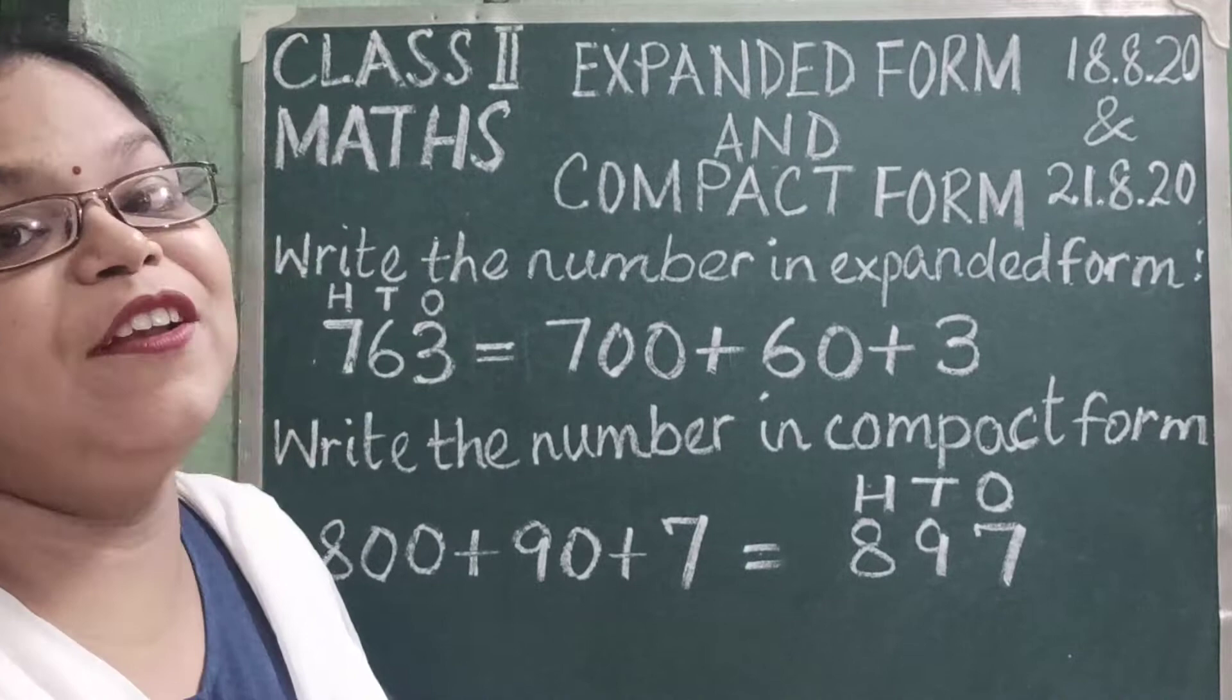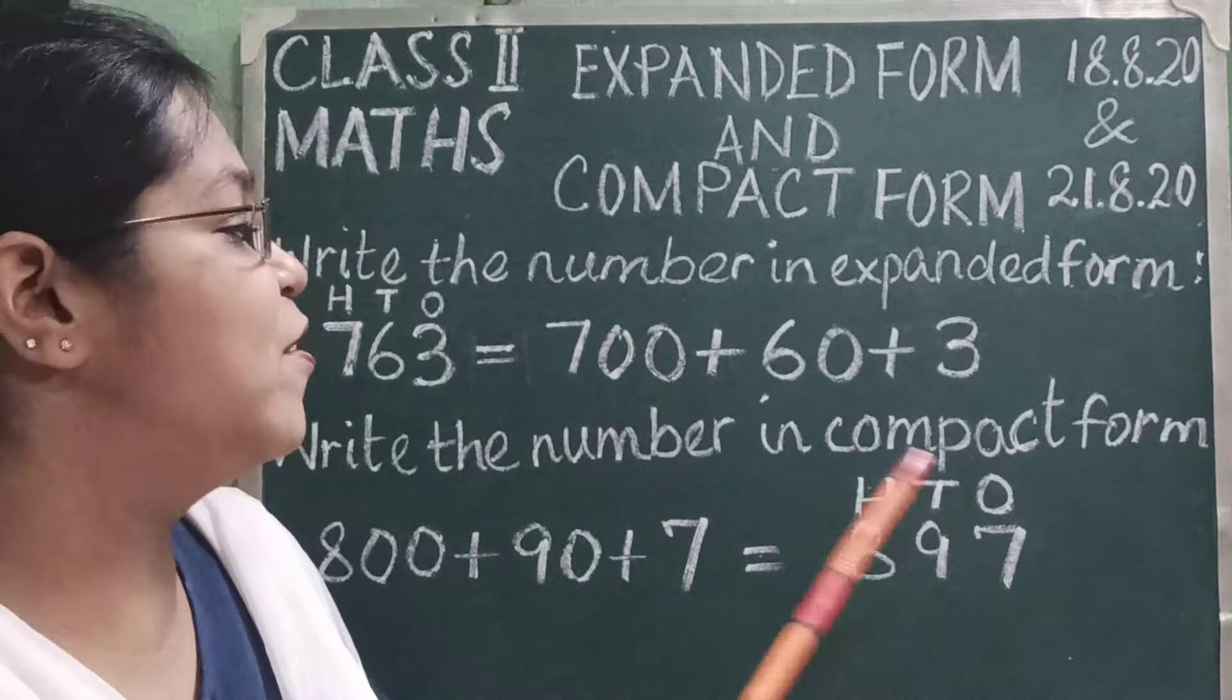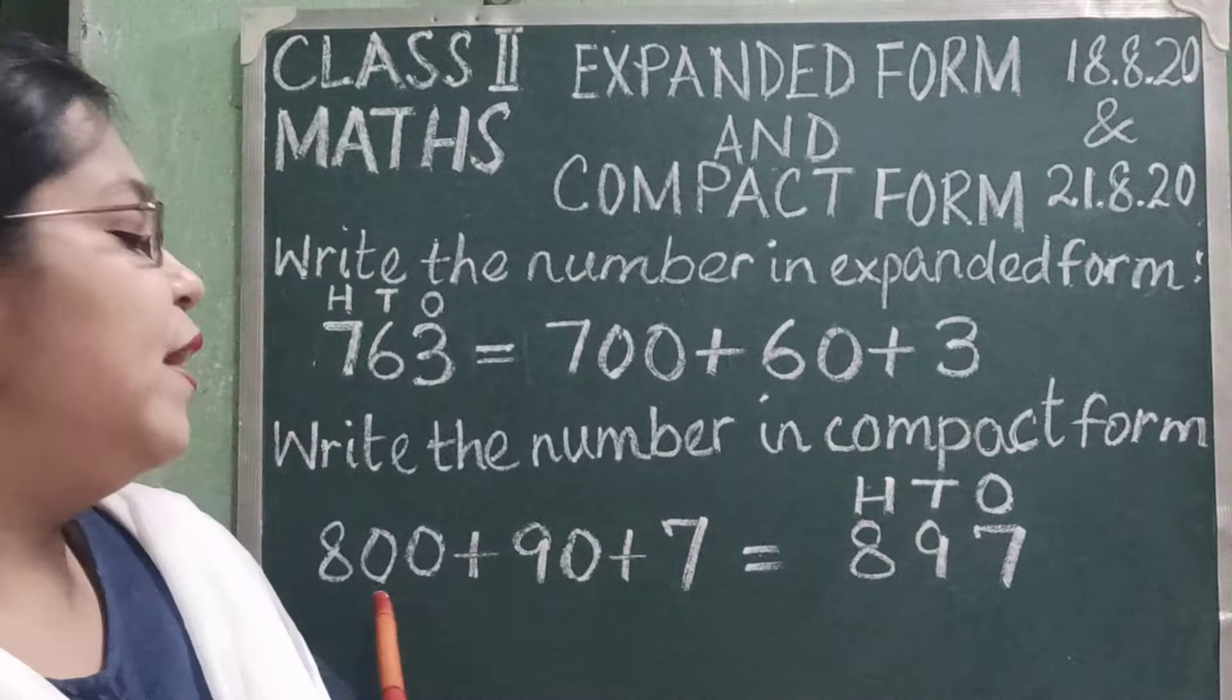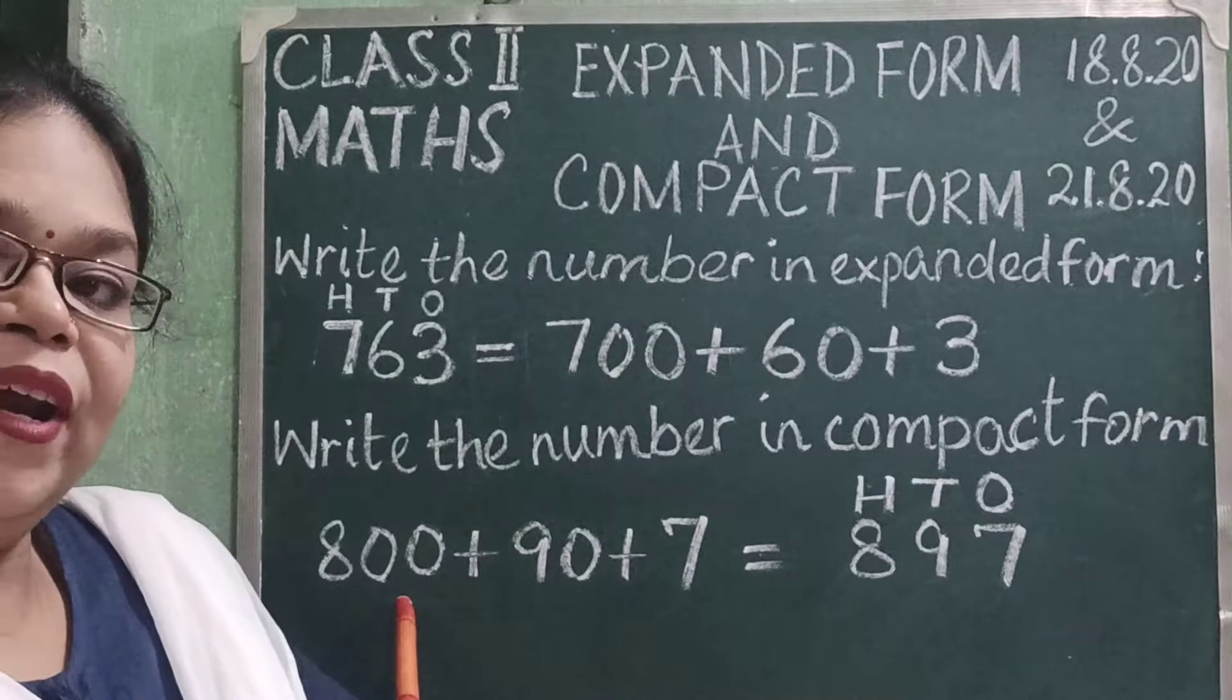Now children, again please look at the board. Write the number in compact form. Children, you can see the number is given in the expanded form: 800 plus 90 plus 7.